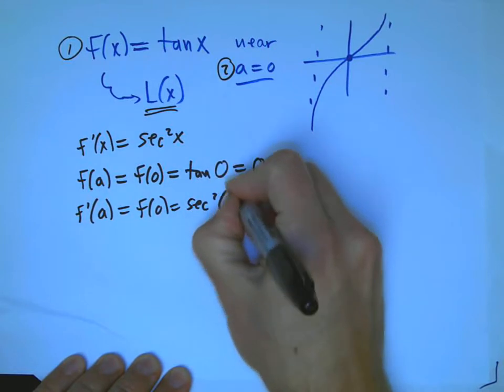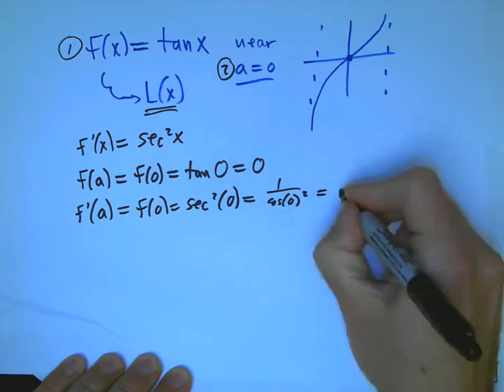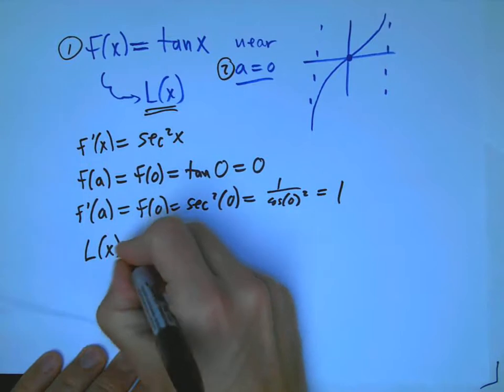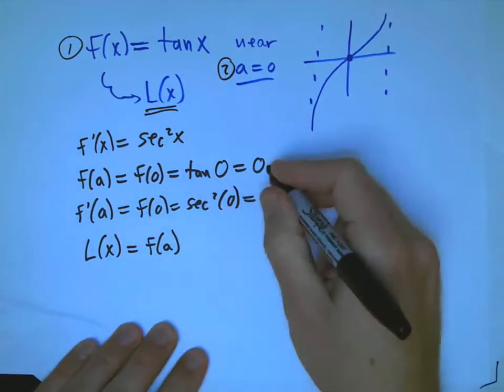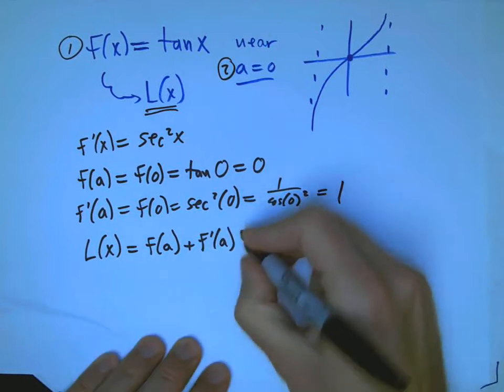Remember, our general formula is the linear approximation is whatever that value is of the function at a, plus whatever the derivative is, times x minus a. And remember, this is a number always. This is a number always. This is a number. The only variable in here is x. And I just get 0 plus 1 times x minus 0 equals x.